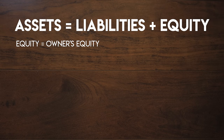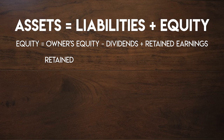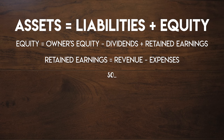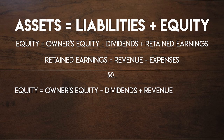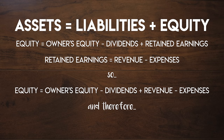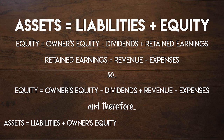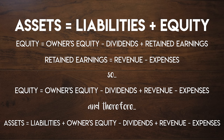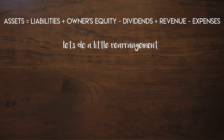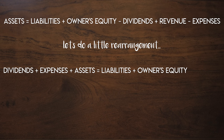Equity equals owner's equity paid in, less dividends paid out, plus retained earnings. Retained earnings can be thought of as profit held for future use, and profit is made up of revenue less expenses. So let's replace retained earnings with revenue less expenses, giving us: equity equals owner's equity paid in, less dividends, plus revenue, less expenses. Taking this definition and substituting into the accounting equation: assets equal liabilities plus owner's equity paid in, less dividends, plus revenue, less expenses. Rearranging: dividends plus expenses plus assets equal liabilities plus owner's equity paid in plus revenue.